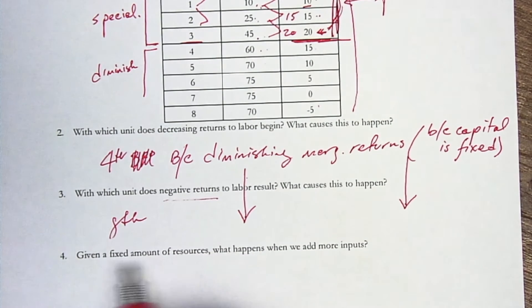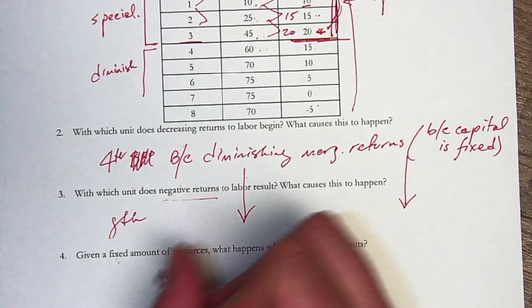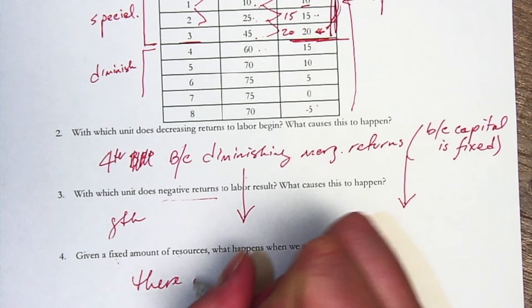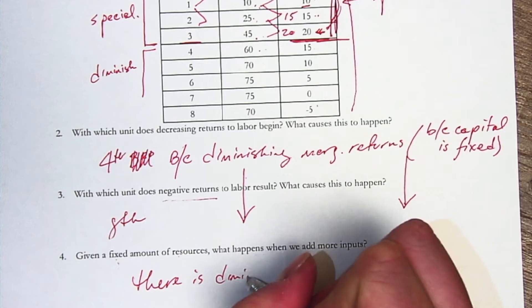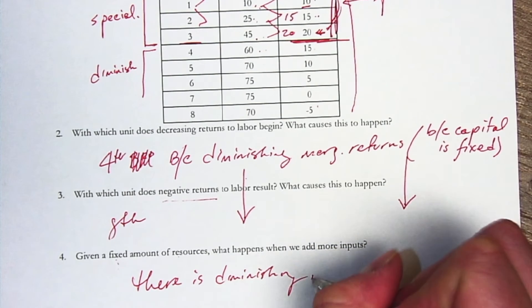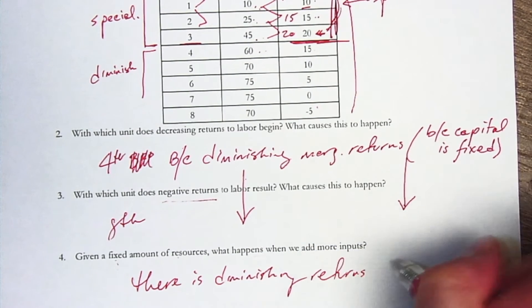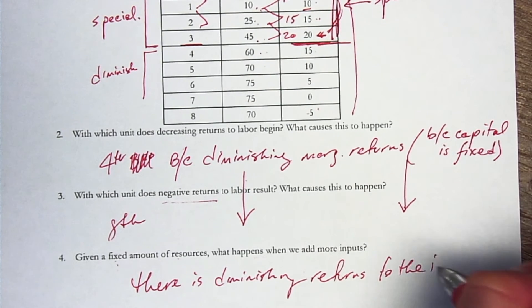And we could say, generally, that given a fixed amount of resources, what happens when we add more inputs? There is diminishing returns to the input.